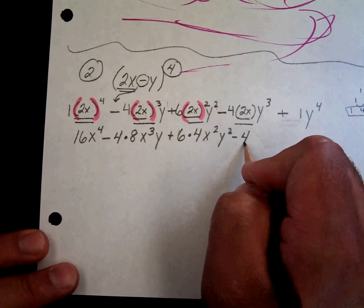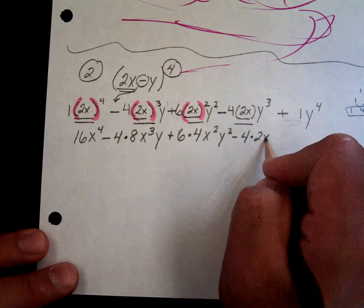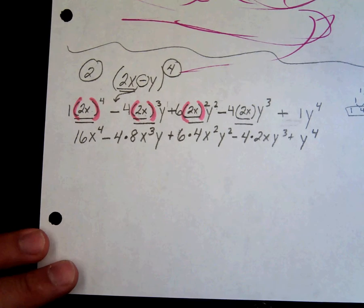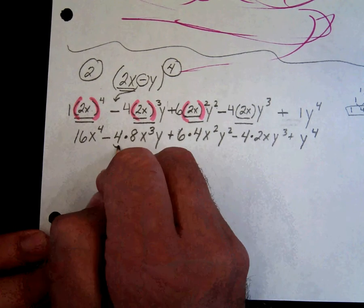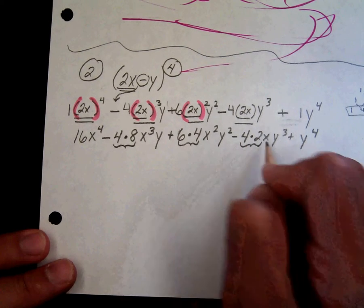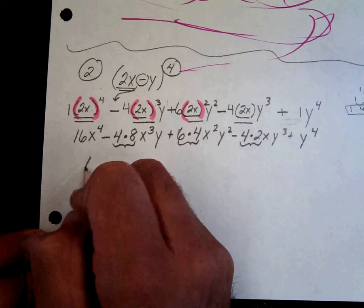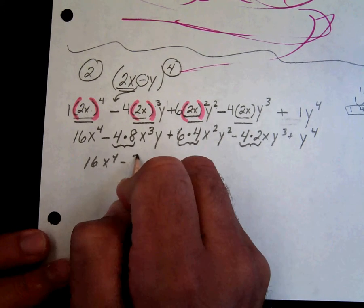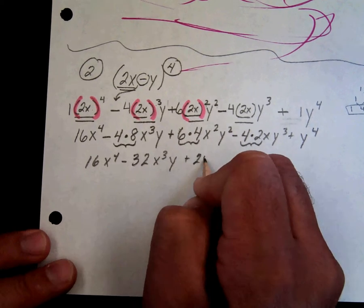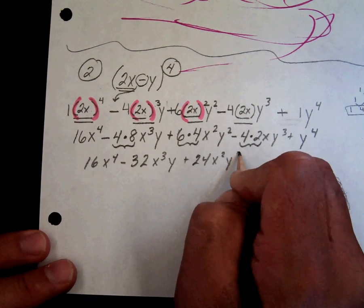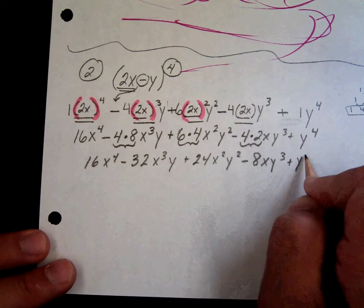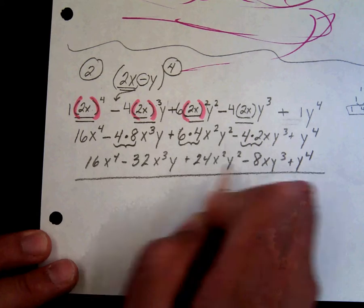Minus 4 times 2x, y cubed plus y to the fourth. The only thing we need to do now is multiply these coefficients, multiply these, and multiply these. 16x to the fourth minus 32x cubed y plus 24x squared y squared minus 8xy cubed plus y to the fourth is the final answer.